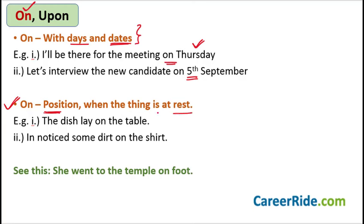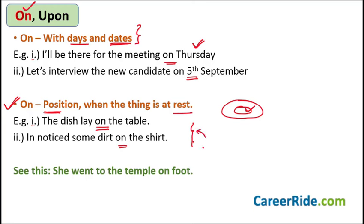The next use of 'on' is to denote the position of something when the thing is at rest. If there is a table and a dish lying on the table, and the dish is not moving, then 'the dish lay on the table.' I notice some dirt on the shirt — the dirt is not moving, it has already settled there. So 'I notice some dirt on the shirt' is what we would say.